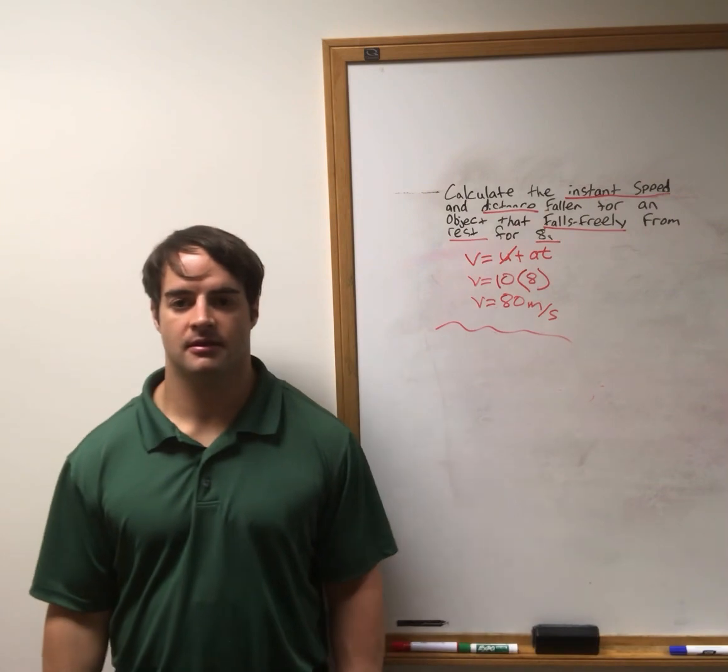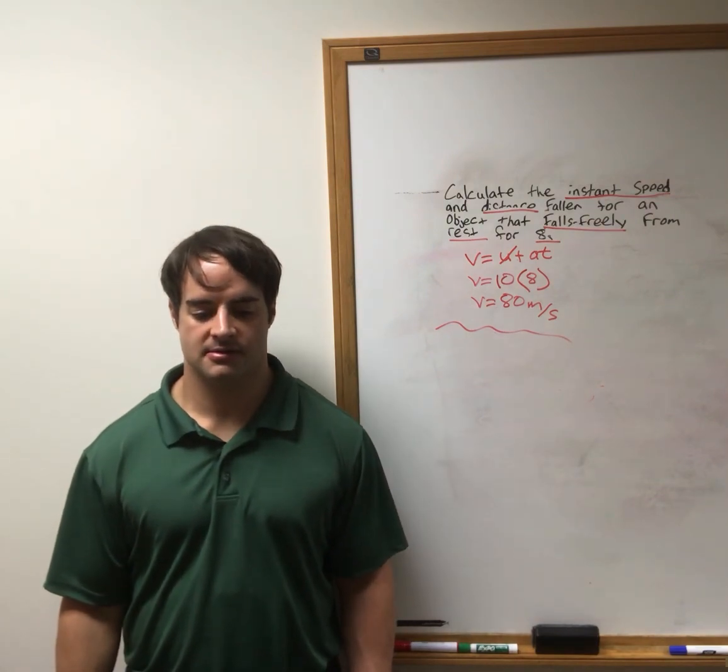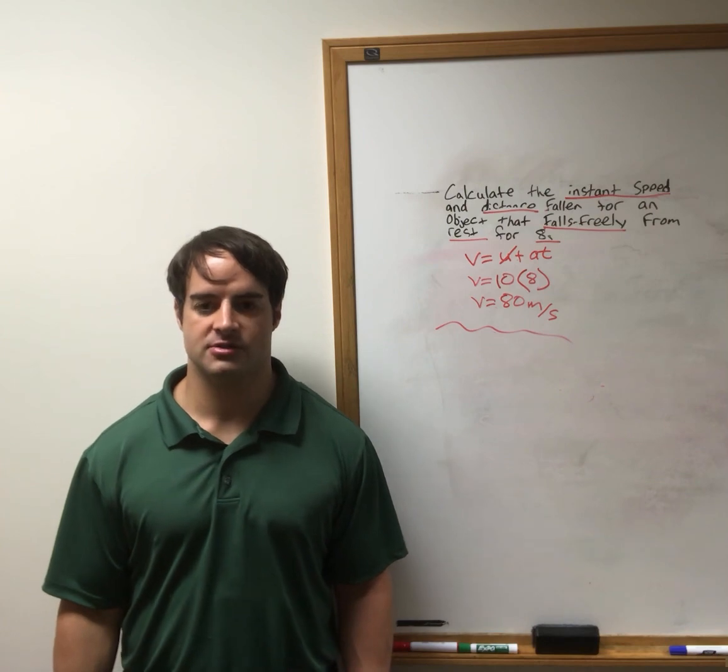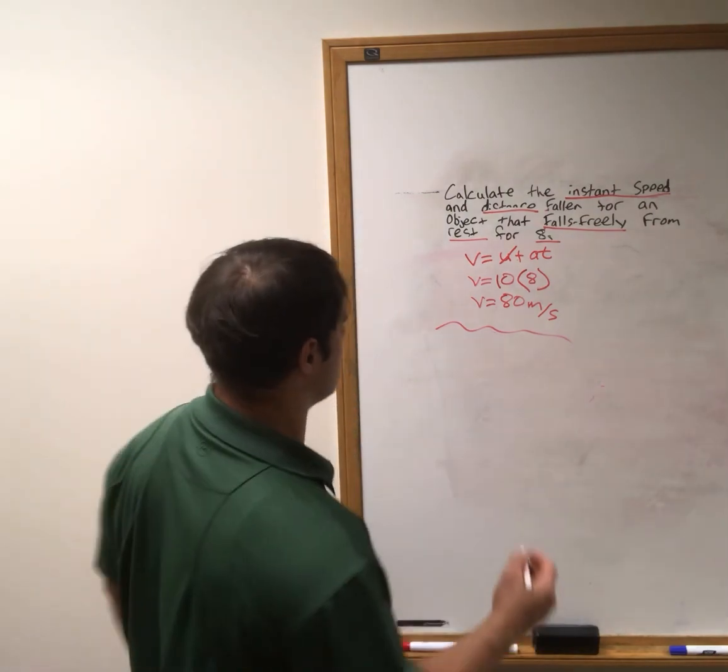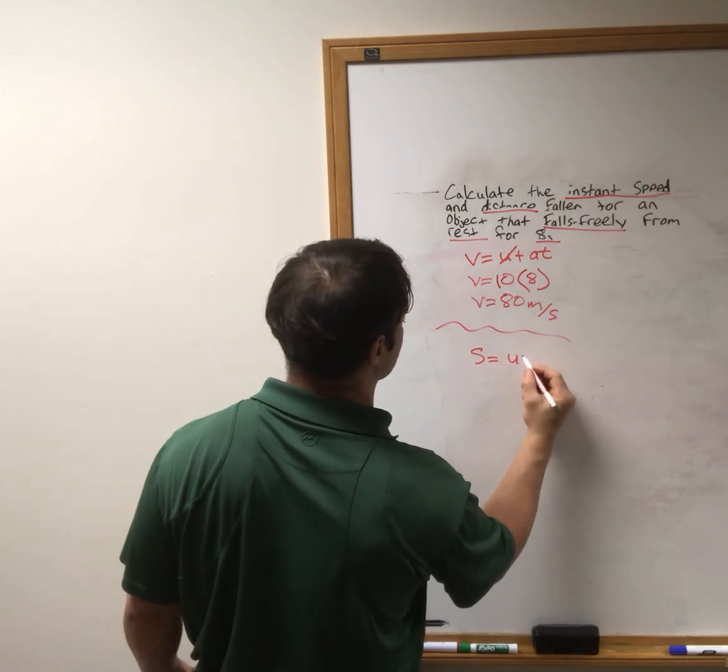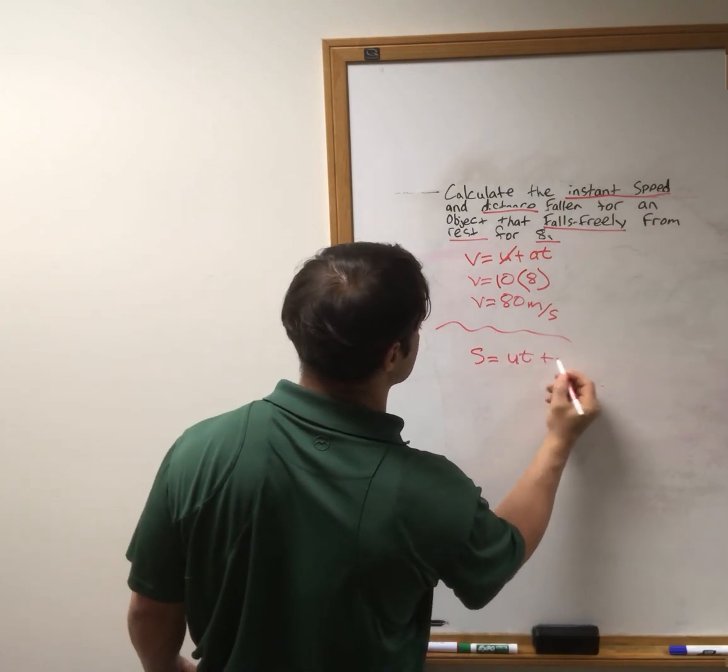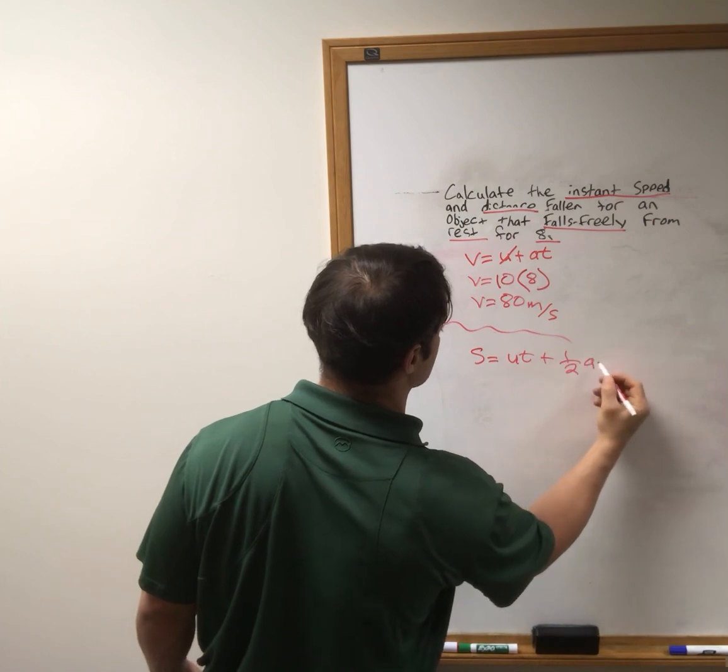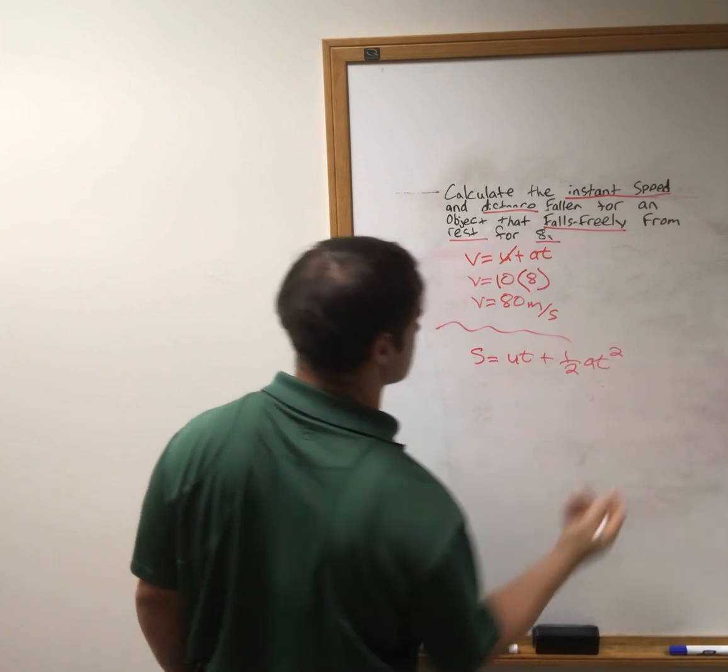Okay, next, distance fallen. And for the distance, we're gonna use the equation: the distance equals the initial velocity times time plus half acceleration times time squared.